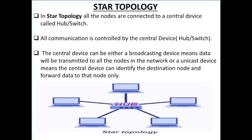First we have star topology. In star topology, all the nodes are connected to a central device called hub or switch. Star topology mein jitne bhi nodes hote hain, jitne bhi devices hote hain, woh ek central device se connected hote hain. Yeh central device aapka hub bhi ho sakta hai, ya switch bhi ho sakta hai.